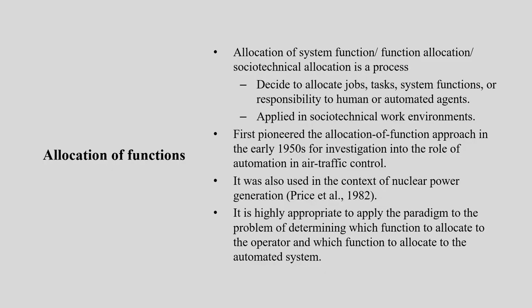Allocation of system function — also called function allocation or socio-technical allocation — is a process that decides how to allocate job, task, system function, or responsibility. It allocates these to either the human component, the operator of the system, or the automated agent — the machine.